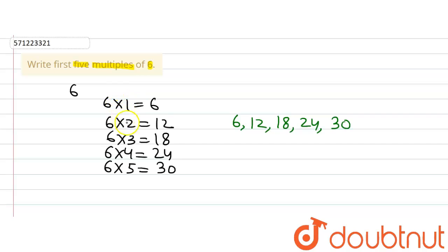So whenever we are supposed to find out the first five multiples of a number, what we are going to do is multiply that number by one, then by two, then by three, then by four, then by five.